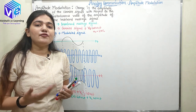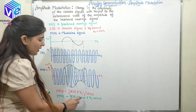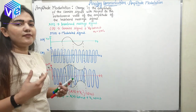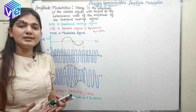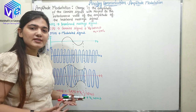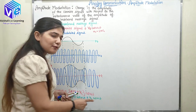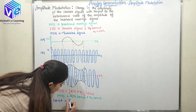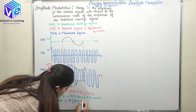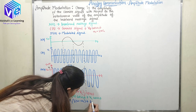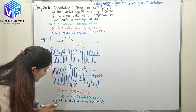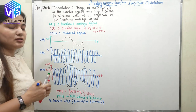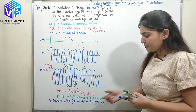Now if I have to represent the frequency spectrum of this modulated signal, I should know the frequency spectrum of x(t)·cos(ωct) and Vc·cos(ωct). I know the frequency spectrum of cos(ωct). Whenever I represent any signal in the frequency domain, I will use its Fourier transform. The Fourier transform of cos(ωct) is π[δ(ω − ωc) + δ(ω + ωc)]. Vc is a constant, so when I multiply a constant, the constant is multiplied here as well — this is the property of the Fourier transform.